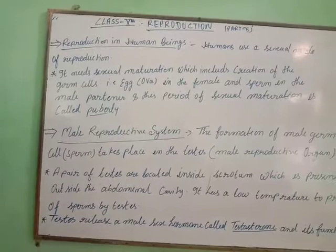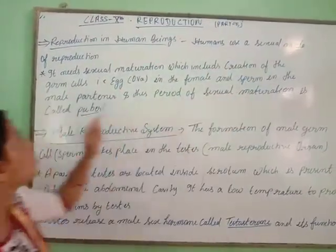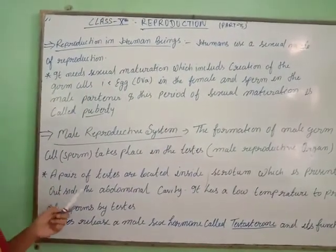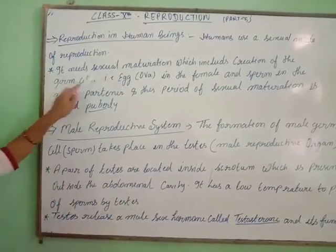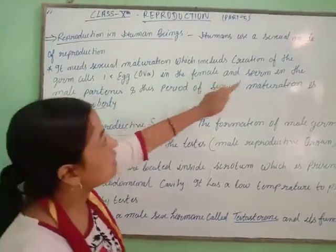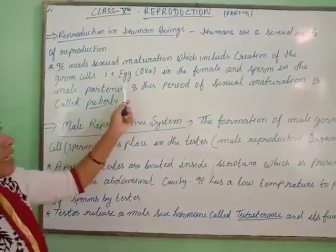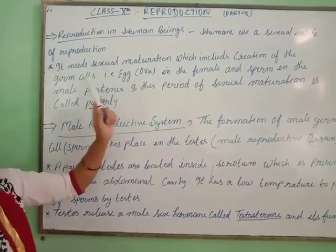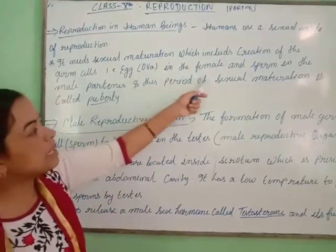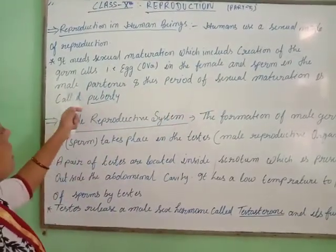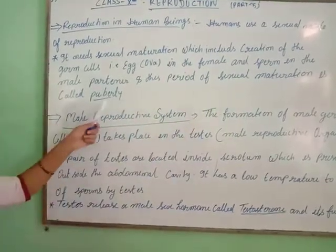Let's see what happens in reproduction in human beings. Humans use a sexual mode of reproduction. The two gametes come together and make sexual reproduction. It needs sexual maturation, which includes creation of a germ cell, for example an egg. Egg is separated in ova and ova is found in the ovary in the female, and sperm is the male part. This period of sexual maturation is called puberty.